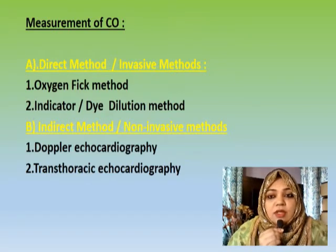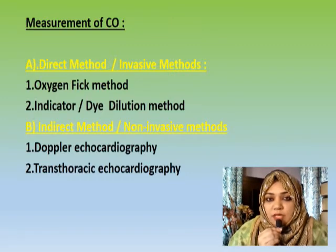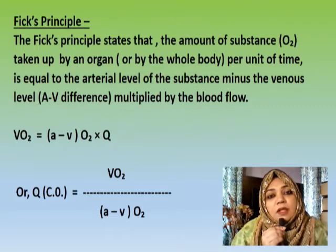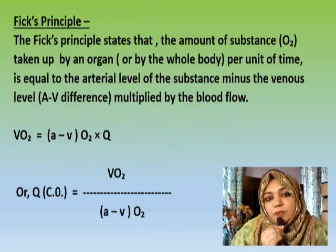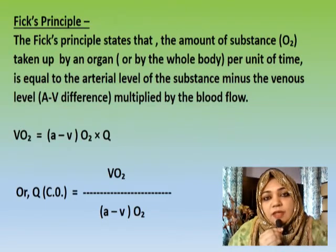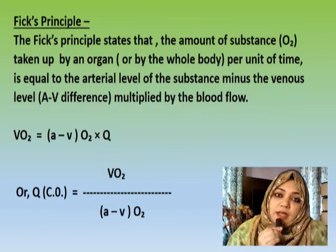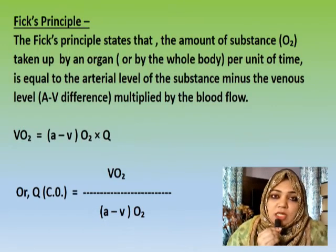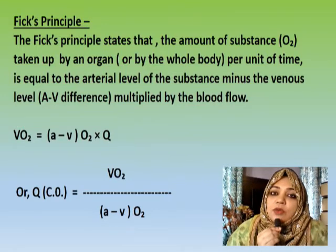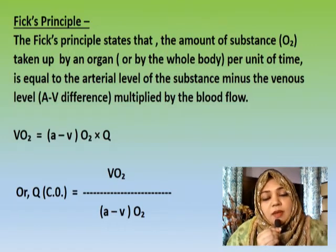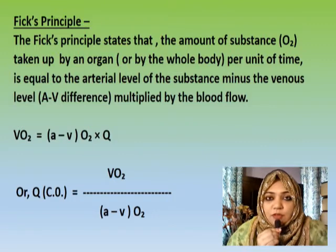For study purposes we need to know the direct methods, and the direct methods are the oxygen Fick method and the indicator or dye dilution method. Each method has its advantages and drawbacks, but we will learn about the oxygen Fick method. The Fick principle states that the amount of substance taken up by an organ or the whole body per unit time is equal to the arterial level of the substance minus the venous level of the substance, multiplied by the blood flow.